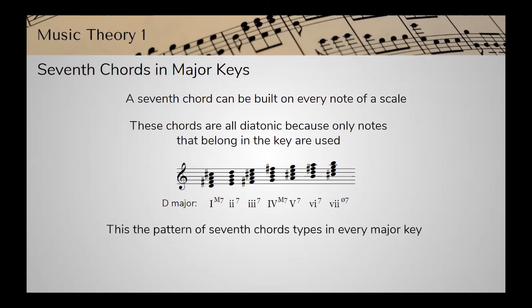This is the pattern of seventh chord types in every single major key. C major, A major — all major keys have the same pattern. The one chord in major will always be a major seventh; the five chord will always be a dominant seventh; the seven chord will always be a half diminished seventh, and so on.